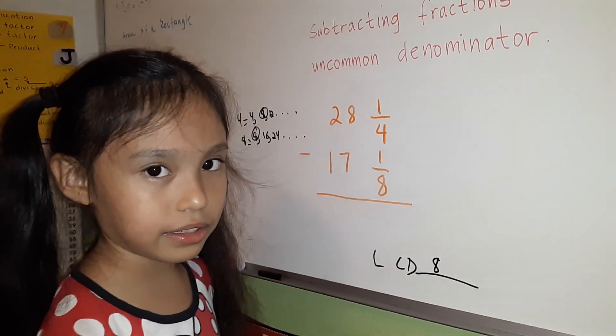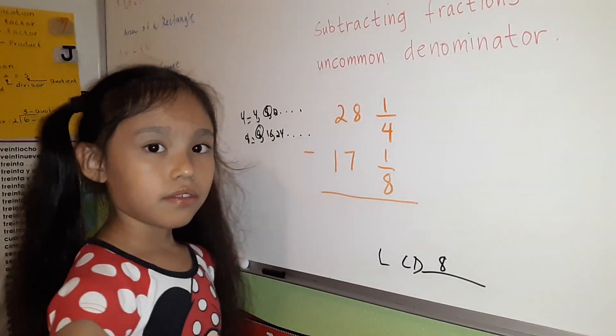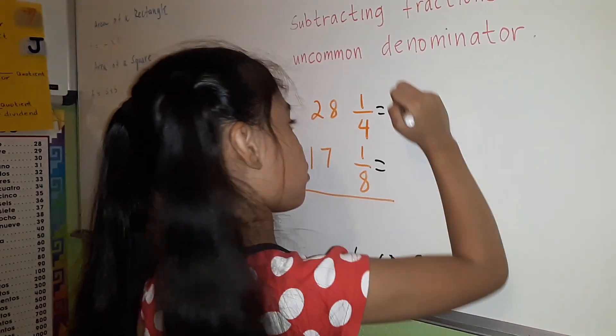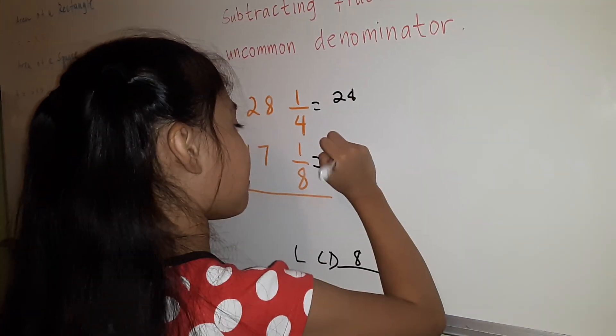I'm going to change our denominators to 8. First we're going to write the whole numbers, 28 and 17.